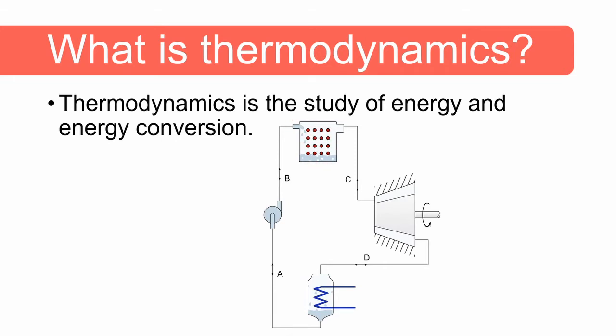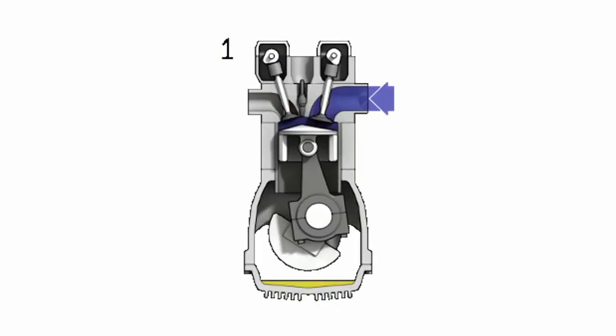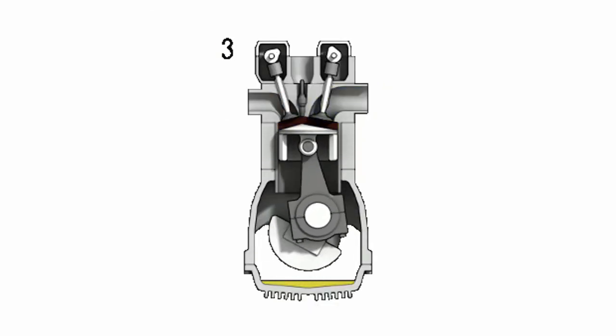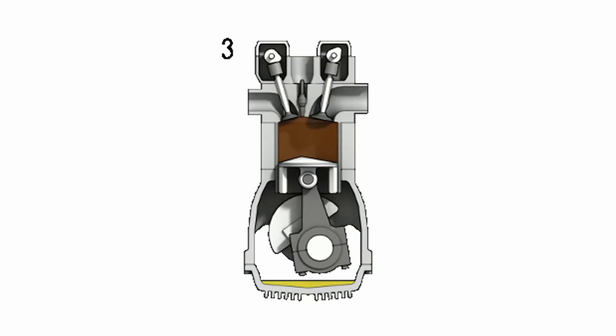As mass flows between these subsystems — in and out of the turbine, in and out of the condenser — we can say that this is an open system. These control volumes are open systems as mass flows into and out of each one. Another system that converts energy is an internal combustion engine.